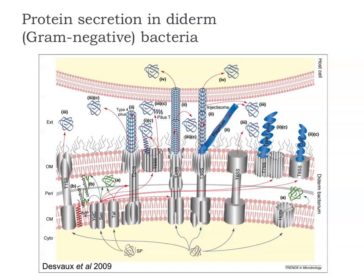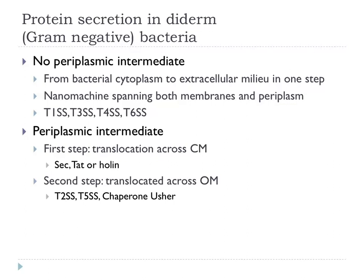The key point is that we can classify these systems into two main varieties. First, those where there is translocation across the inner membrane first — proteins have a periplasmic intermediate — and then they go across the outer membrane. Or you can have complex protein machineries spanning the whole cell envelope — inner membrane, periplasm, and outer membrane all in one apparatus — so proteins going through that route do not have a periplasmic intermediate. Either there is or is not a periplasmic intermediate, and that allows classification into two broad classes.